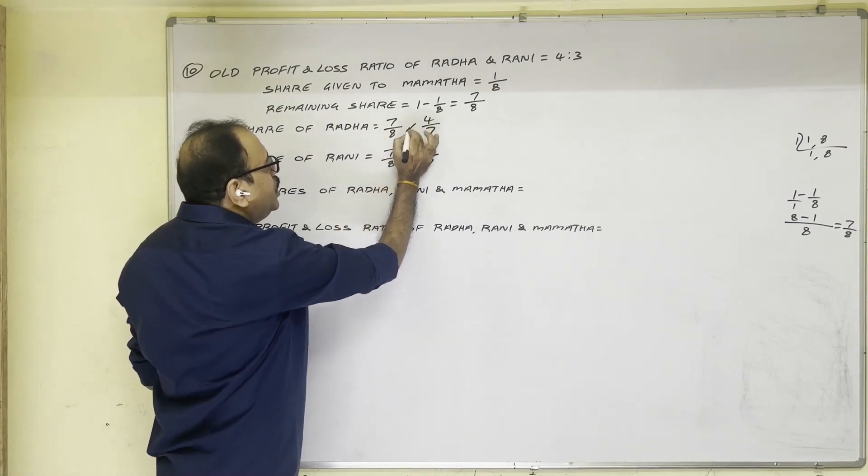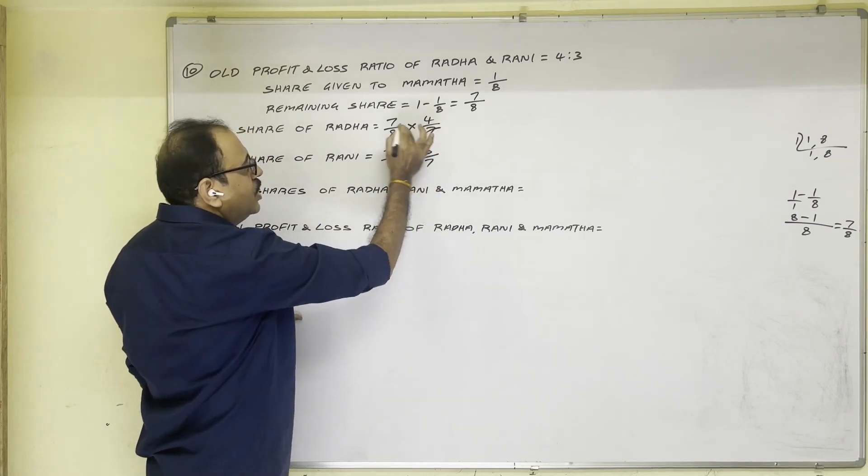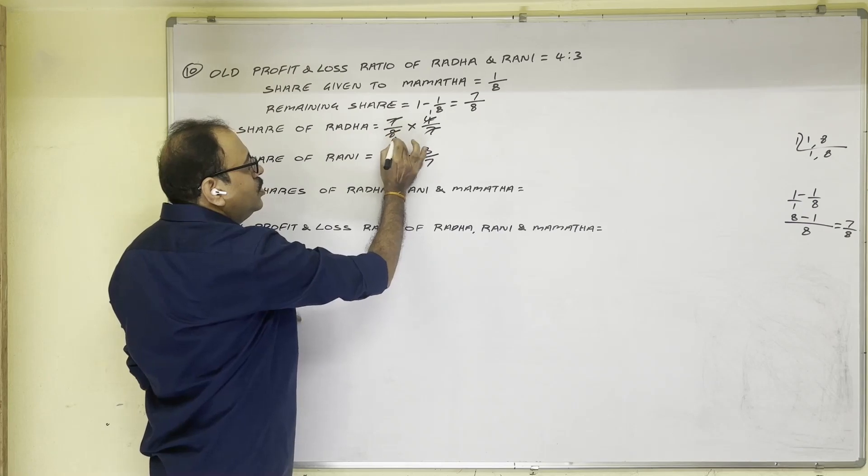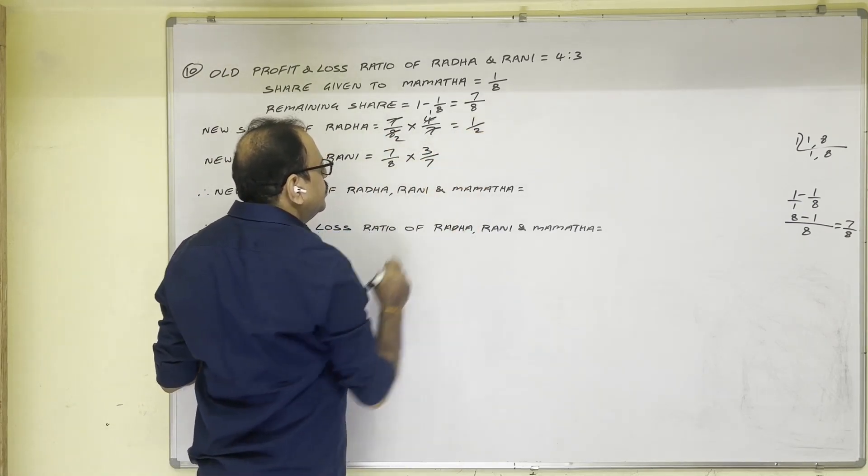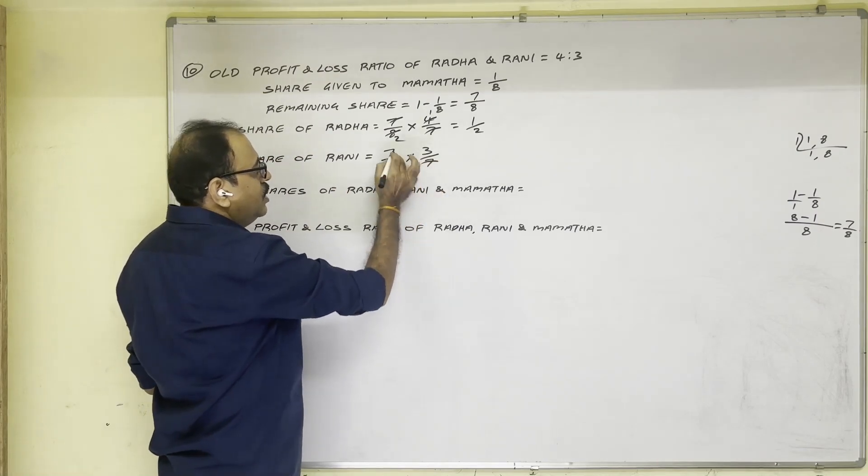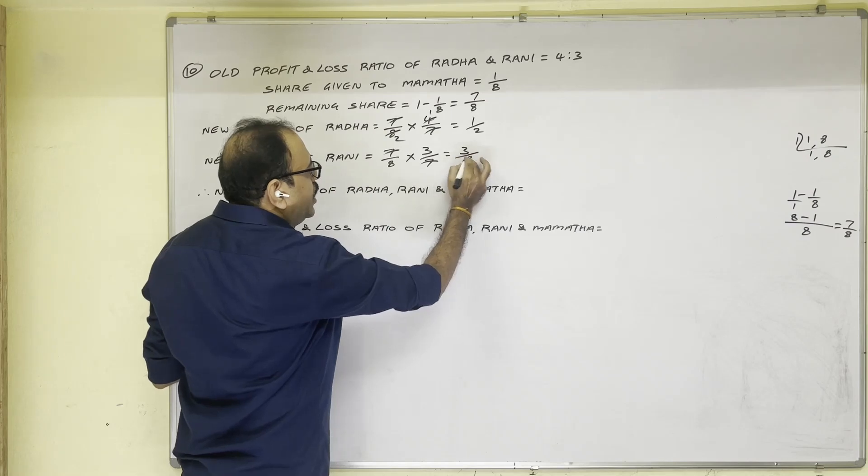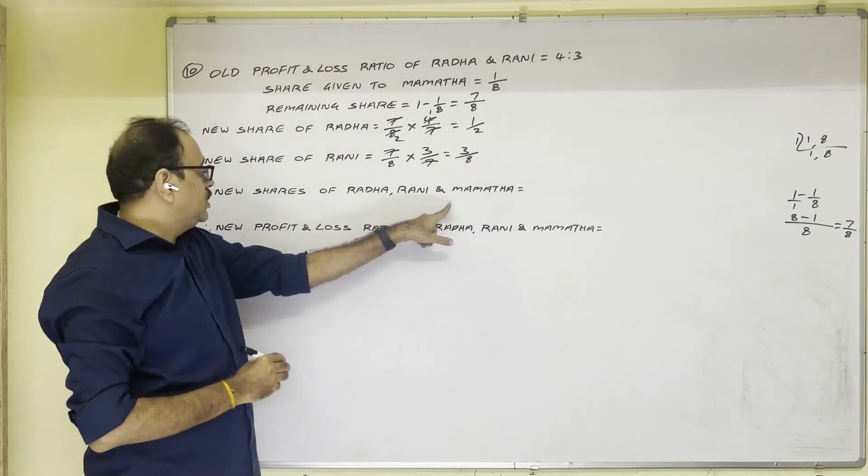How it comes? Four-seventh of seven-eighth, we have to multiply these two. Seven and seven cancel. Four ones are four, four twos are two. Finally one by two. Here, seven and seven cancel. This three we cannot cancel now. Three by eight.